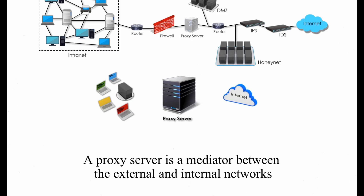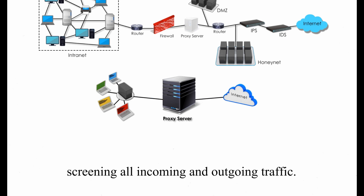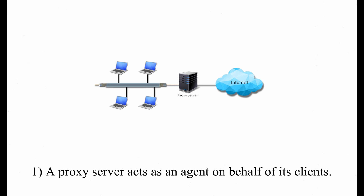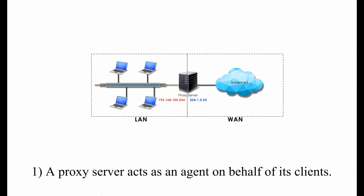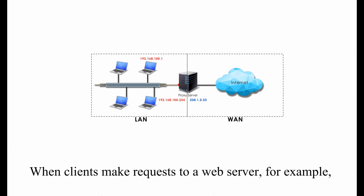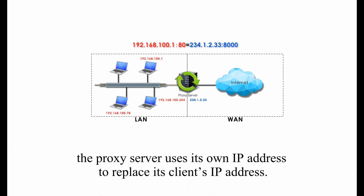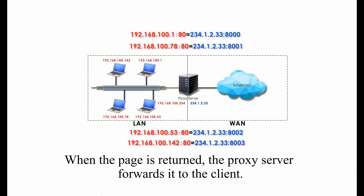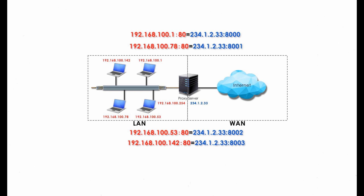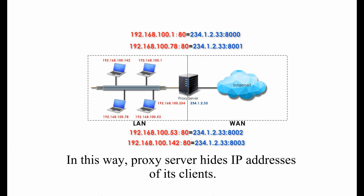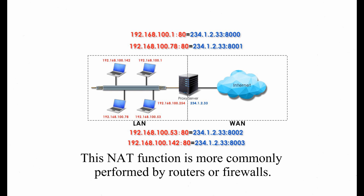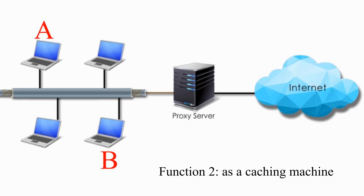A proxy server is a mediator between the external and internal networks, screening all incoming and outgoing traffic. A proxy server has at least five functions. One: a proxy server acts as an agent on behalf of its clients. When clients make requests to a web server, the proxy server uses its own IP address to replace its client's IP address. When the page is returned, the proxy server forwards it to the client. In this way, the proxy server hides IP addresses of its clients. This function is called Network Address Translation, or NAT. This NAT function is more commonly performed by routers or firewalls.